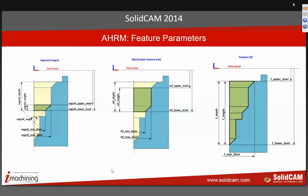I want to discuss the characteristics of the parameters used so that when Sid shows you through the database it makes more sense. We use segments, machinable features, as well as the entire hole feature. There are various different parameters defined by the relationship of a particular segment, the machinable feature, or relative to the overall hole feature recognition. As we get ready to go into the database, keep these parameters in mind. Sid, go ahead and show us how they can use these within the technology database to automate the process of machining the hole.